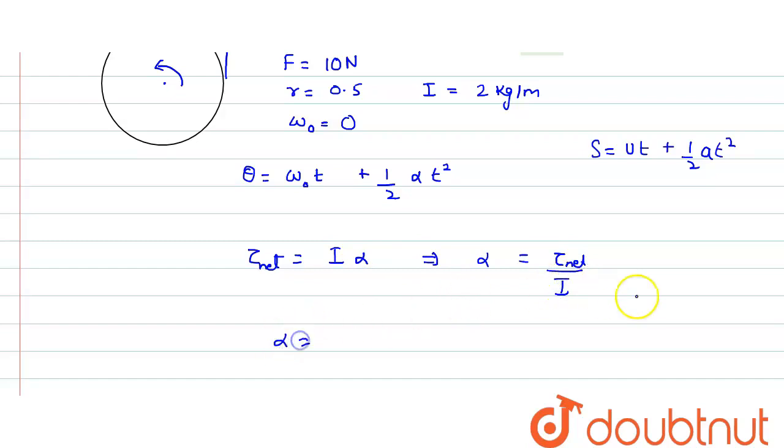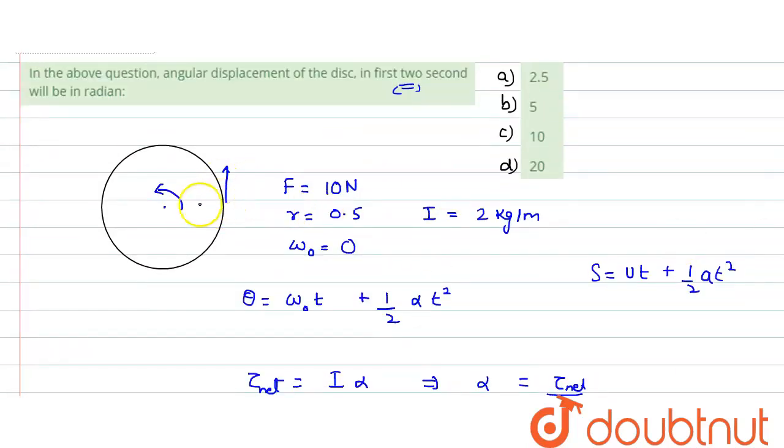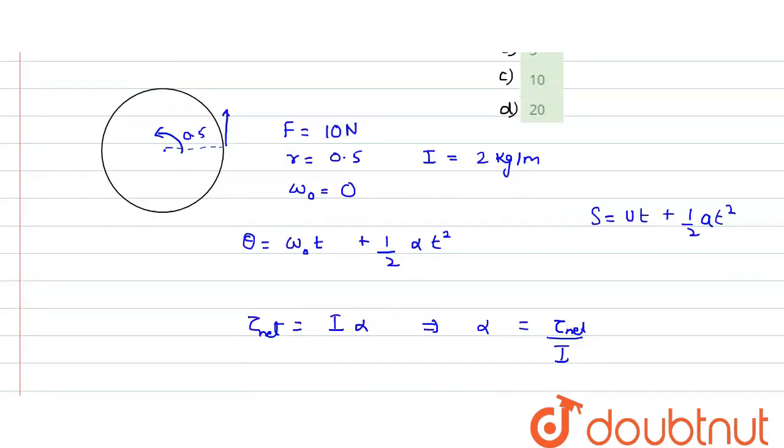So what would be the value of τ net? This force is applied along the circumference. What is the torque which is created? Torque is basically force multiplied by the perpendicular distance. What is the perpendicular distance? It equals 0.5, the radius. So torque value would be 10 into 0.5.